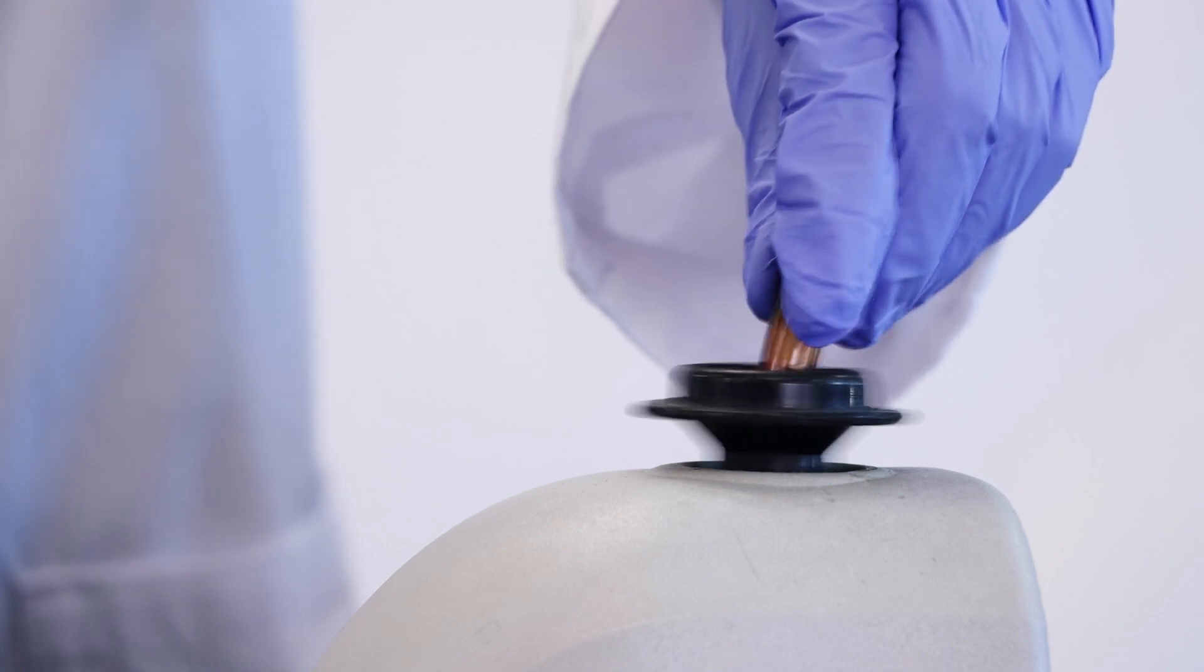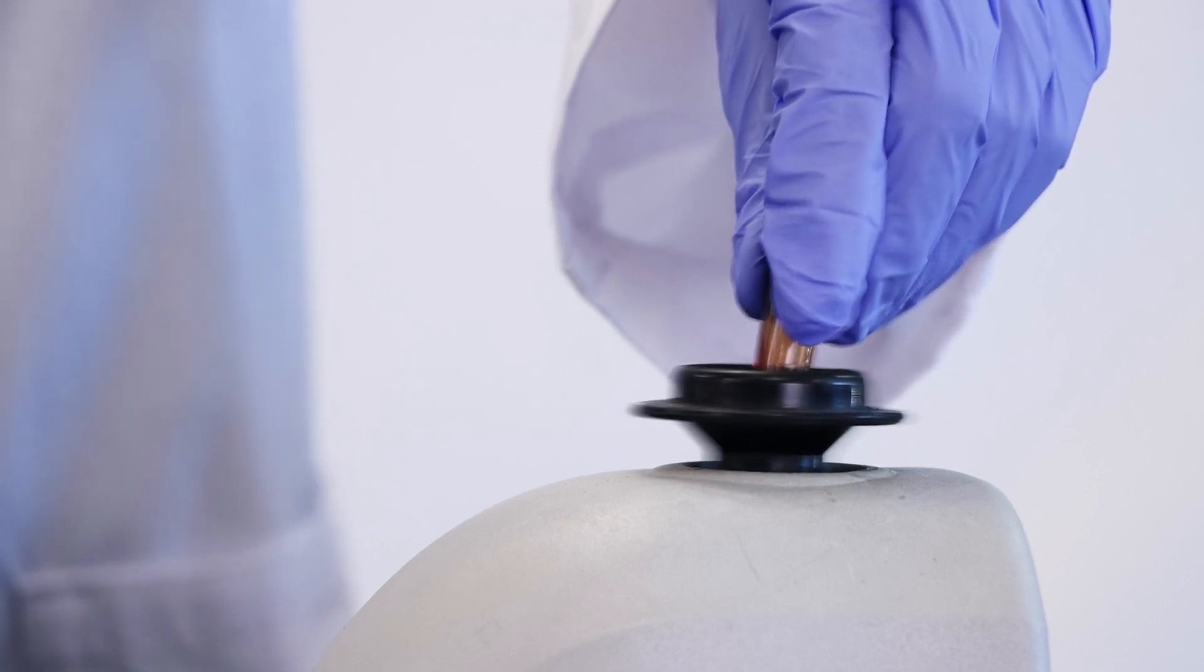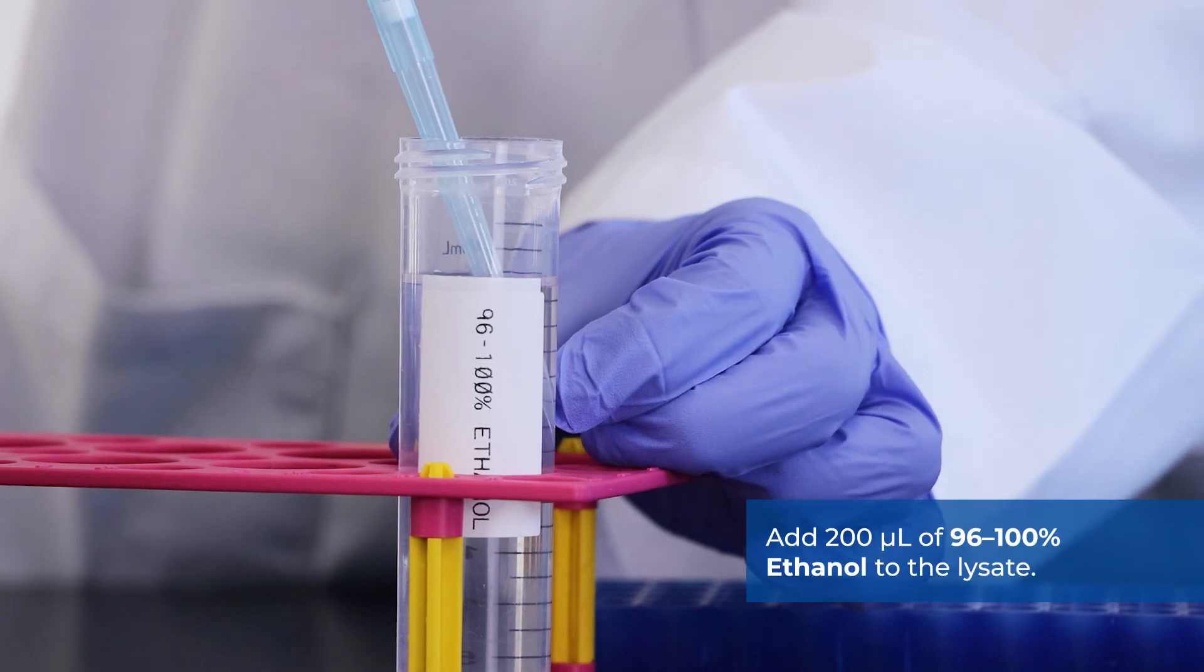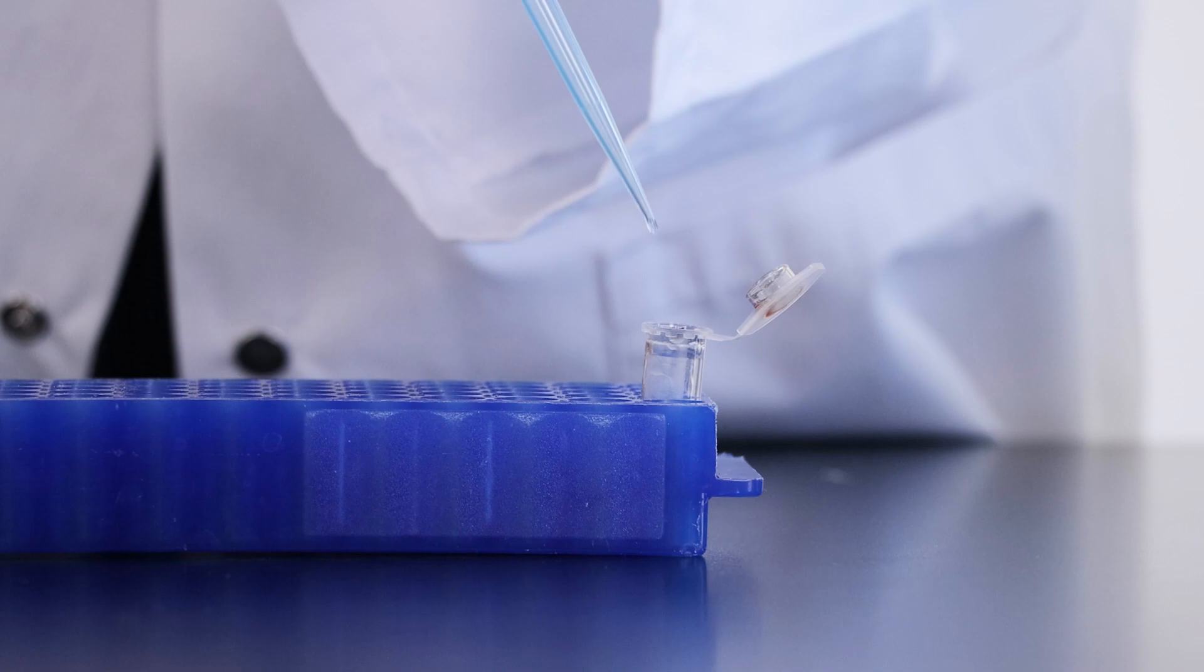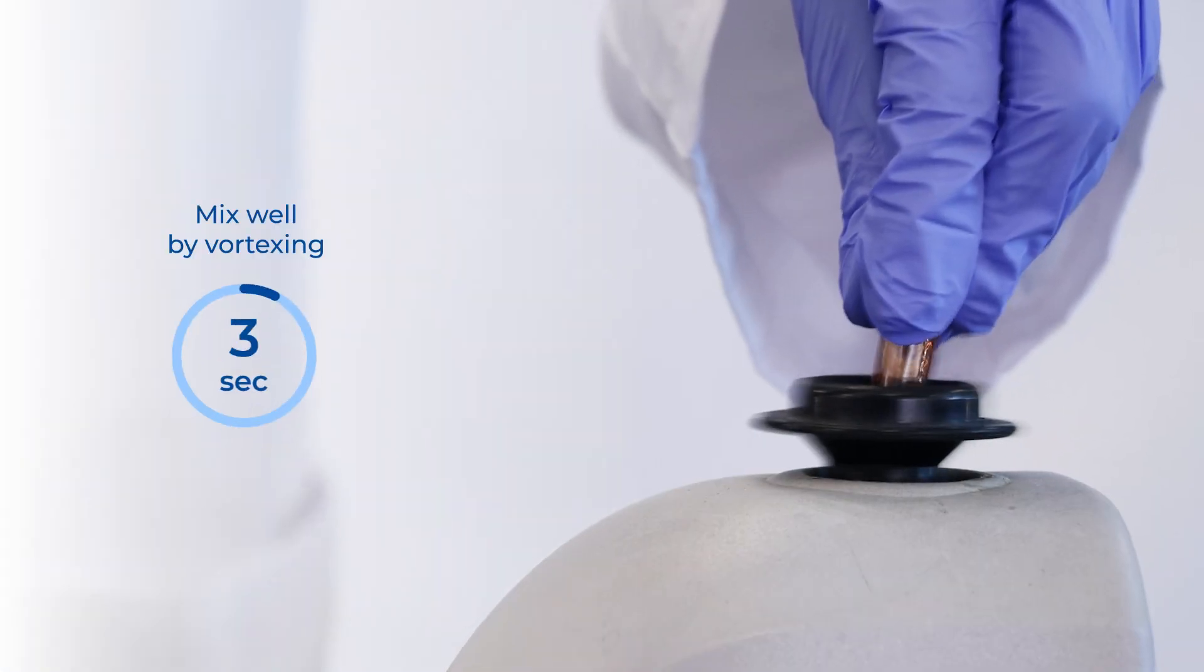Ensure that the mixture becomes a light red color before proceeding to the next step. Add 200 microliters of 96 to 100% ethanol to the lysate. Mix by vortexing for 10 seconds.